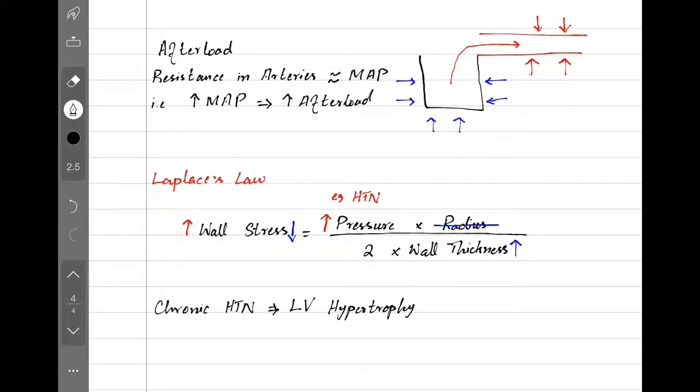So we give them vasodilators to reduce the mean arterial pressure and afterload, for example hydralazine, ACE inhibitors, and ARBs.